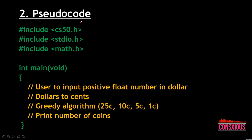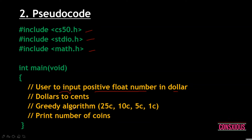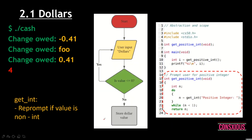This is the pseudocode. In our program we include three libraries: cs50.h, stdio.h, and math.h. Inside integer main void, the user will input a positive float number in dollars. We then convert from dollars to cents, apply the greedy algorithm from twenty-five cents down to ten, five, and one cent, and finally print the number of coins.